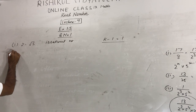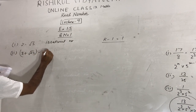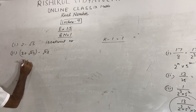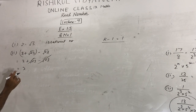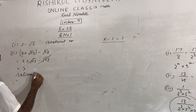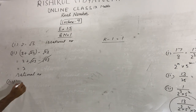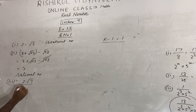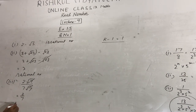Second: (3 + √23) minus √23. Here √23 and minus √23 cancel out, leaving 3. Three is a rational number. Third: 2√7 upon 7√7 — √7 cancels with √7, giving 2 upon 7. And 2/7 is in the form p upon q where p and q are integers and q is not equal to zero, so it is a rational number.